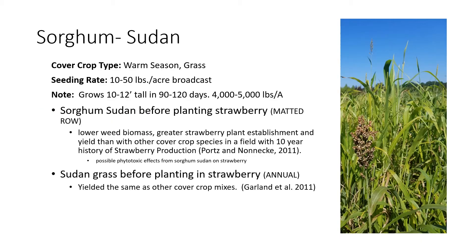Another commonly planted grass cover crop is sorghum sudan, also warm-season with variable seeding rates depending on your method. Sorghum sudan grows much taller — up to 10 to 12 feet — in 90 to 120 days and can produce as much as 4,000 to 5,000 pounds of biomass, so growers need equipment to mow and till it into the soil. Research in a matted-row system found it lowered weed biomass and improved strawberry plant establishment. There has been some concern about phytotoxic effects on subsequent plants, but work done in annual systems in North Carolina found that strawberry plants planted after sorghum sudan yielded the same as other cover crop mixes.